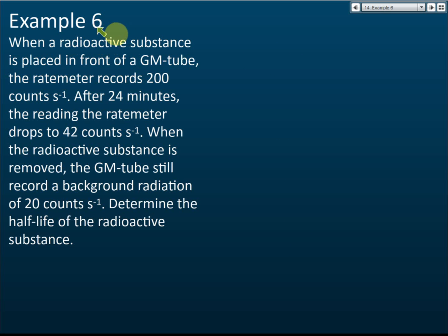The last one, Example 6. Now this one you must be careful of. When the radioactive substance is removed, the GM-tube still records the background radiation of 20 counts per second. So it means that initially if the record is 200, out of this 200 there are 20 for background and 180 from the sample.